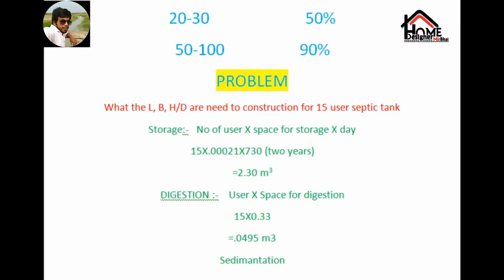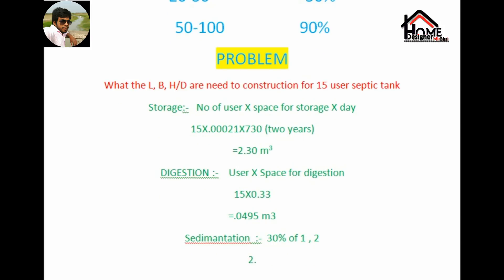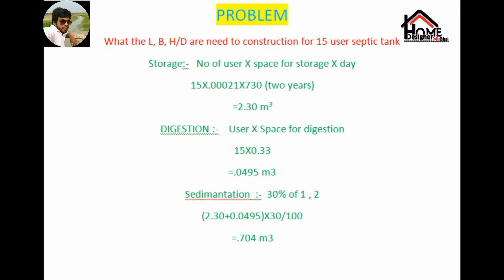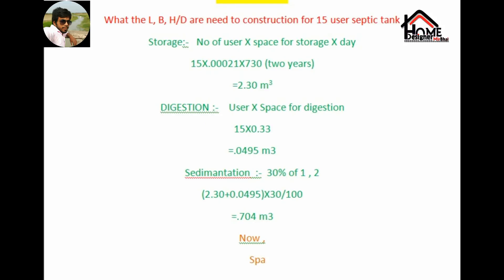Now space of sedimentation: 15 users, 30 percent — of space of storage. 2.30 plus 0.0495 into 30 divided by 100 equals 0.0704 meter cube.